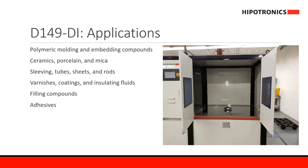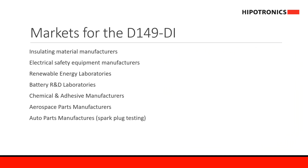The D149 DI series can be used to test polymeric moldings, embedding compounds, ceramics, tubes, sheets, rods, varnishes, coatings, adhesives, or any filling compounds — essentially any type of insulating material for electrical testing. The D149 DI is usually seen in insulating material and electrical safety equipment manufacturers, as well as in laboratories for renewable energy and battery research and development. Chemical and adhesive manufacturers, as well as aerospace and auto parts manufacturers, also use this type of system.